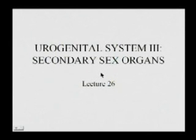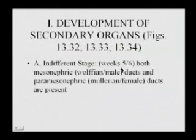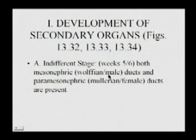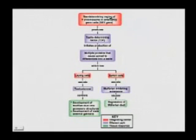We now begin Lecture 26 on the urogenital system, studying the development of the secondary sex organs. We remind ourselves there is an indifferent stage at weeks five to six where both the mesonephric (Wolffian) male ducts and the paramesonephric (Müllerian) female ducts are present. This flow chart shows the events that must occur for differentiation in the male direction.